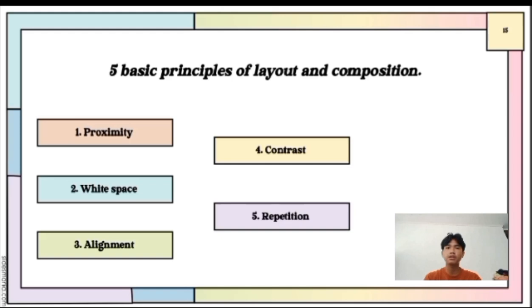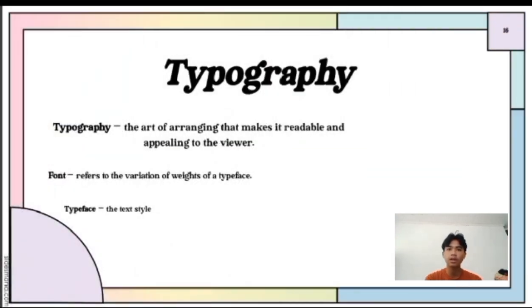The third principle is alignment, which organizes elements for a clear, balanced design similar to formatting in word processors. The fourth one is contrast, which highlights the differences between elements such as color or sizes to attract attention and emphasize important parts. Lastly is repetition, which involves using consistent elements like typefaces or colors to create unity and coherence in a design.